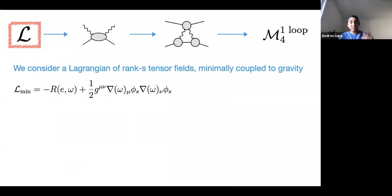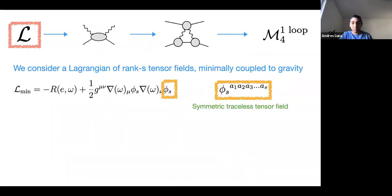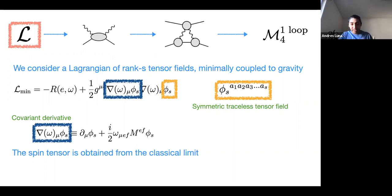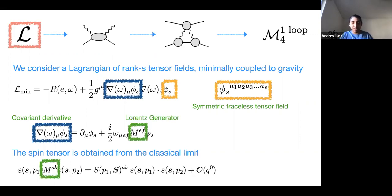A few words about our Lagrangian: it describes rank-s tensor fields minimally coupled to gravity — minimally coupled in the sense that partial derivatives go to covariant derivatives. Our fields are symmetric and traceless but not transverse, which is fine for our problem. Because of this symmetry and tracelessness, the covariant derivative can be expressed as a contraction of the spin connection with the Lorentz generator.